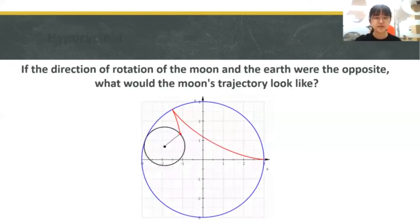If the direction of rotation of the Moon and the Earth were the opposite, what would the Moon's trajectory look like? As a different case, when a curve is drawn by an inscribed circle, this is called a hypocycloid. A hypocycloid also takes many shapes, depending on the radius.